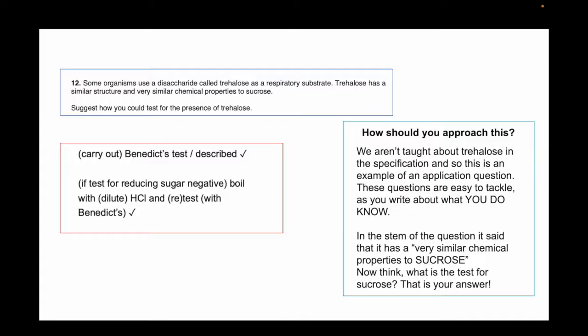I know I say don't read the context, but this one you would have to read the context because we do not know what trehalose is. So let's read the question: some organisms use a disaccharide called trehalose as a respiratory substrate. Trehalose has a similar structure and very similar chemical properties to sucrose. Bingo! That last sentence, very similar chemical properties to sucrose, is your answer.